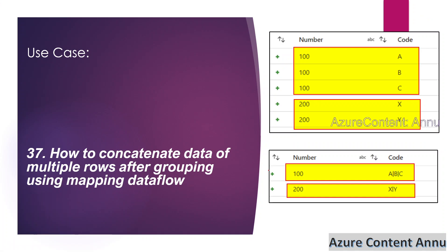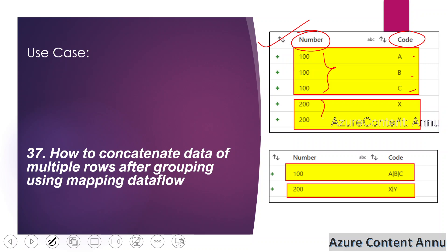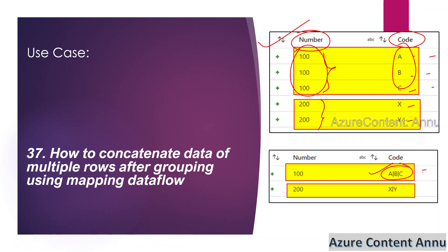Let's see the requirement in detail. This is our input dataset where we have multiple rows and the data is separated into two columns named number and code. Each number can have multiple codes — for number 100 we have three codes: A, B, and C; for number 200 we have two rows: X and Y. We have to group the data based on the number column, and the code column should be transformed from multiple rows into a single row, with values divided by a pipe delimiter.